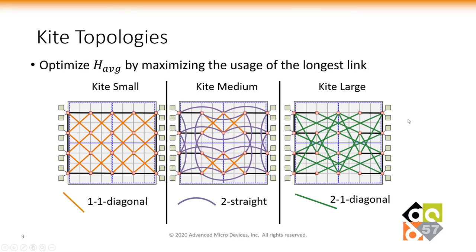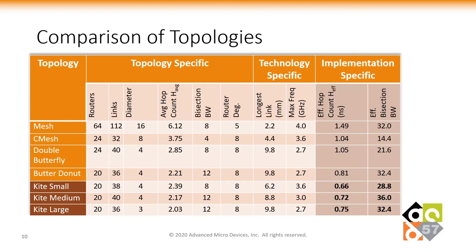This family of topologies co-optimizes the topology-specific average hop as well as the technology-specific maximum operable frequency. This table shows both the topology-specific features and the technology-specific values for each topology. The last two columns show the effective hop count and effective bandwidth. We can see that Kite topologies improve upon the state-of-the-art topology by a good margin in both effective average hop latency and bisection bandwidth. In contrast, the regular average hop metric does not reflect the advantage of Kite topologies effectively.